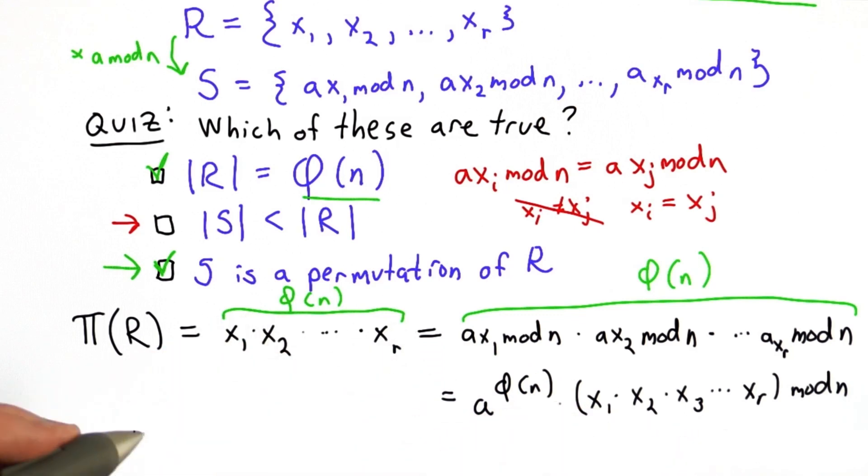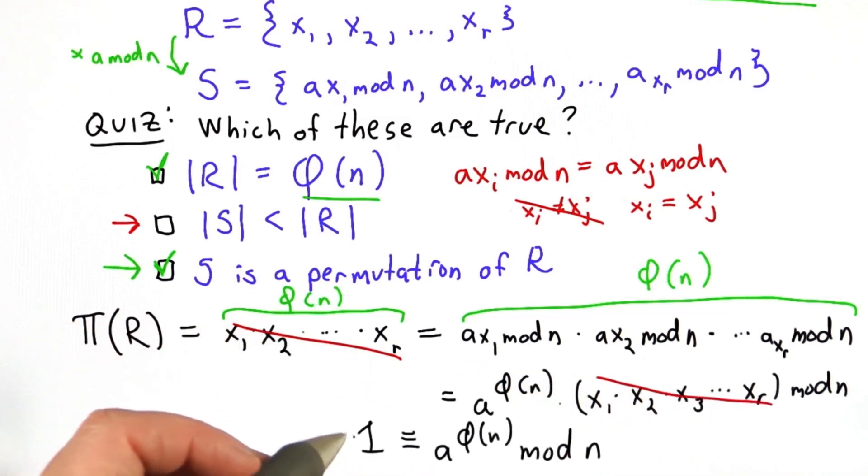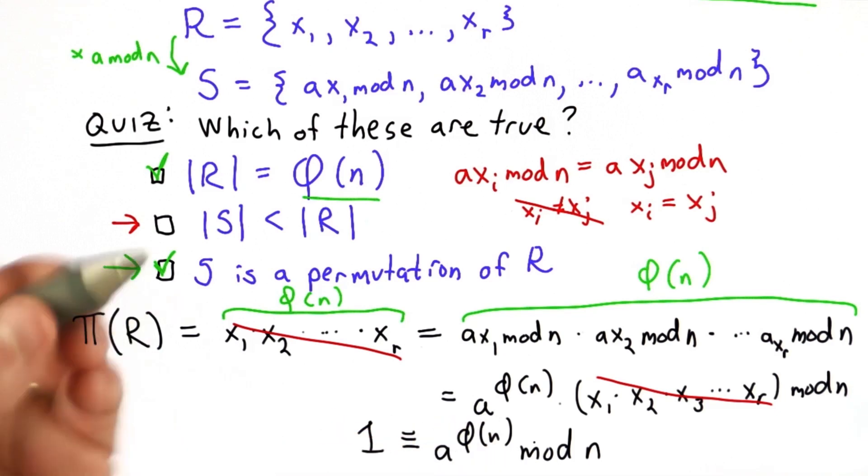Now we can do the division, removing the x's from both sides. So we end up with exactly what we need, which is that 1 is congruent to a to the totient of n power mod n, for any a and n where a and n are relatively prime.